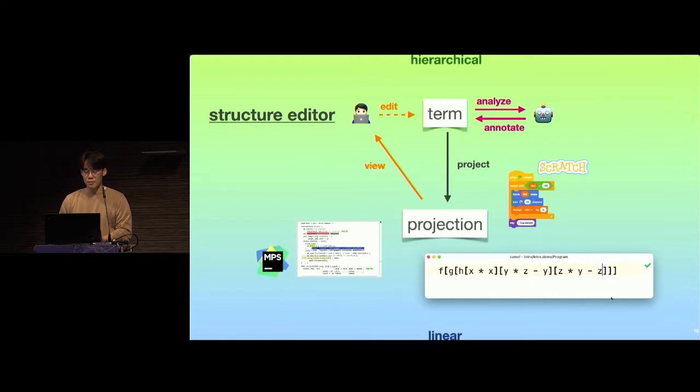What you end up having to do is something like select this argument, cut it, then delete those brackets, and then go out up here, go over here, construct that, and then you have to do the same thing for this other argument here.